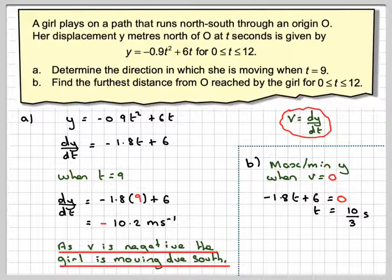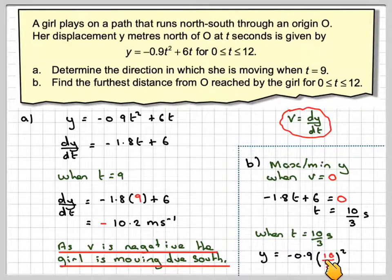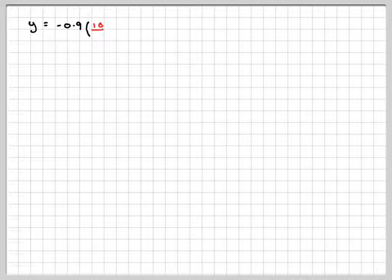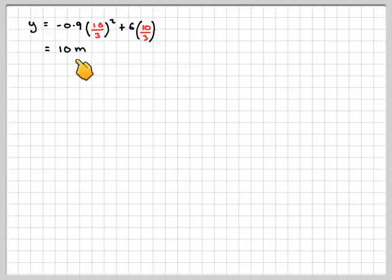We'll put that value of t into y. So when t is 10 over 3, y equals minus 0.9 times (10/3) squared plus 6 times (10/3). If we work that out on our calculator, we get exactly 10 metres.